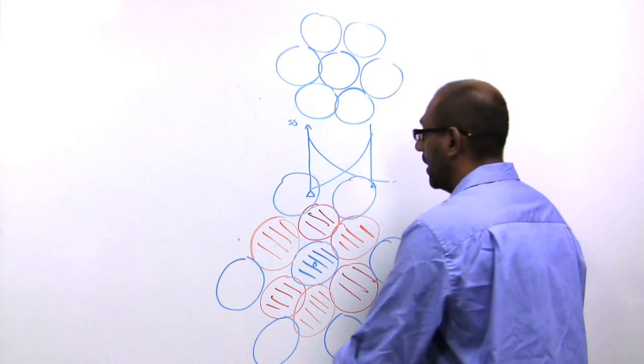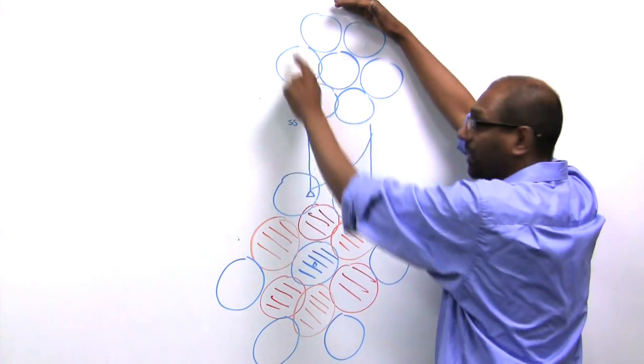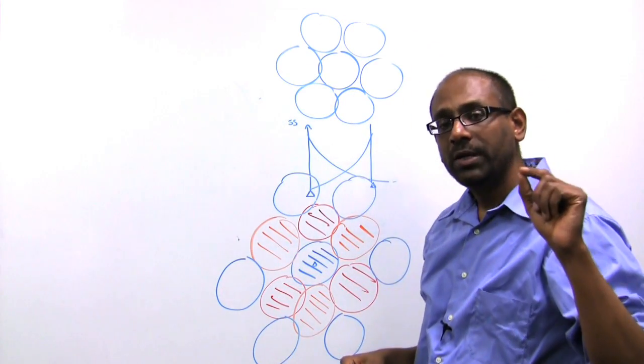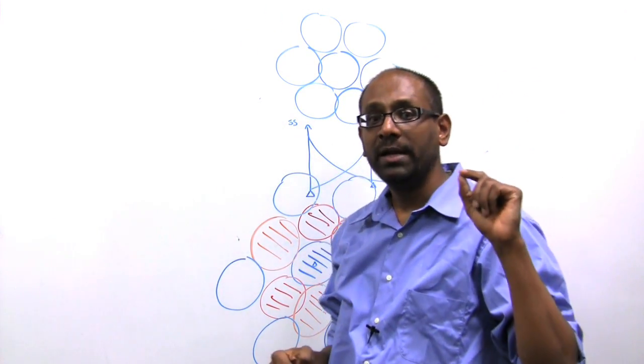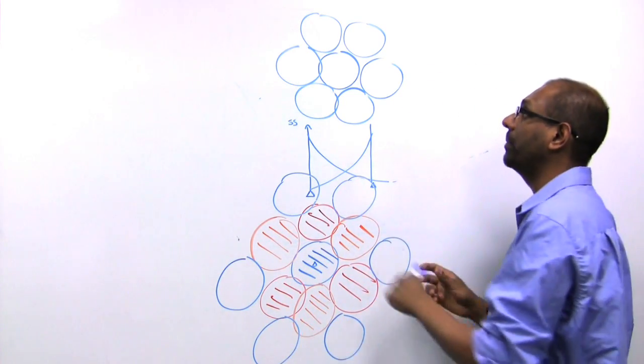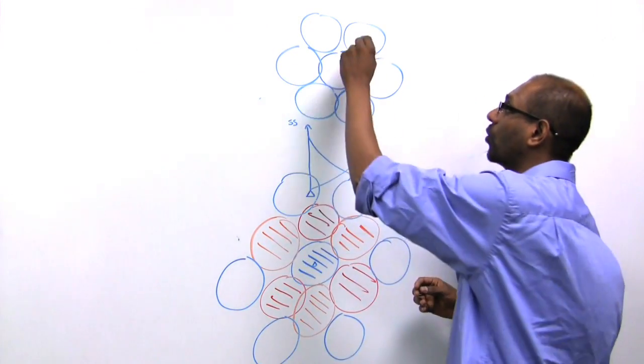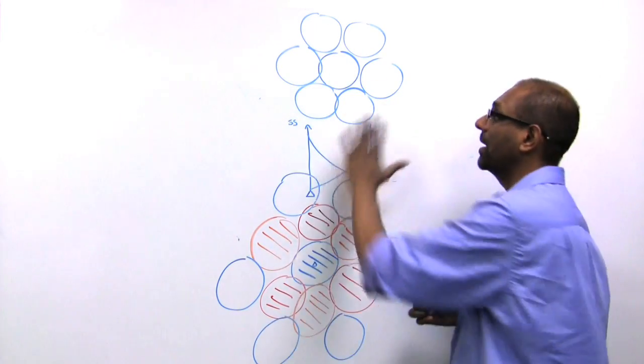But the point here is, taking like for like, using a single color, because we do not require co-channel interference mitigation by design, we are able to take multiple access points, put them on the same channel, coordinate across all of these access points, and provide you coverage.